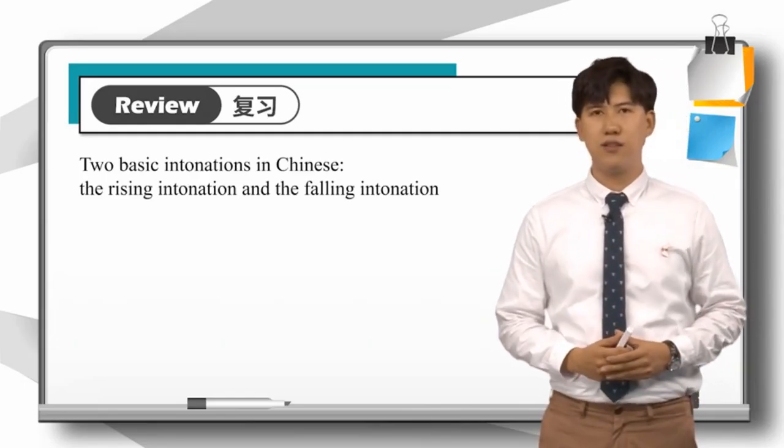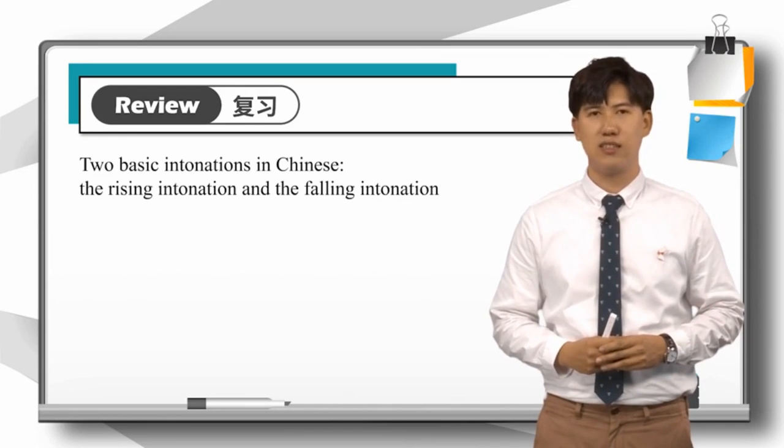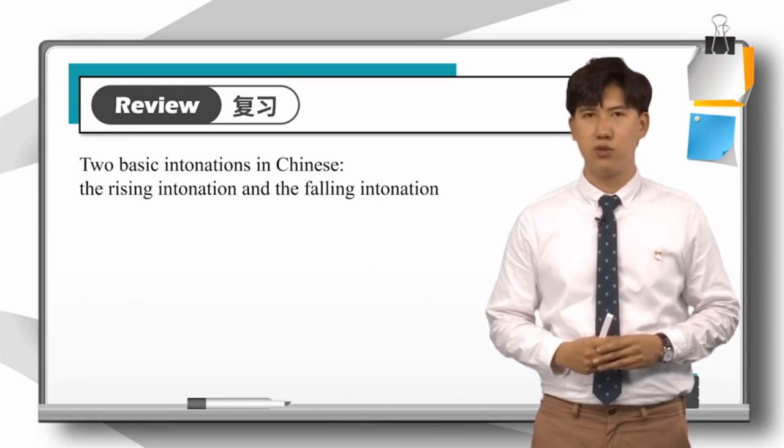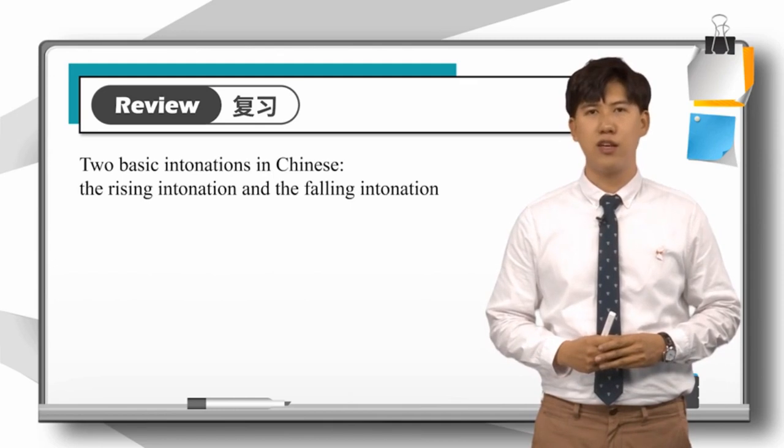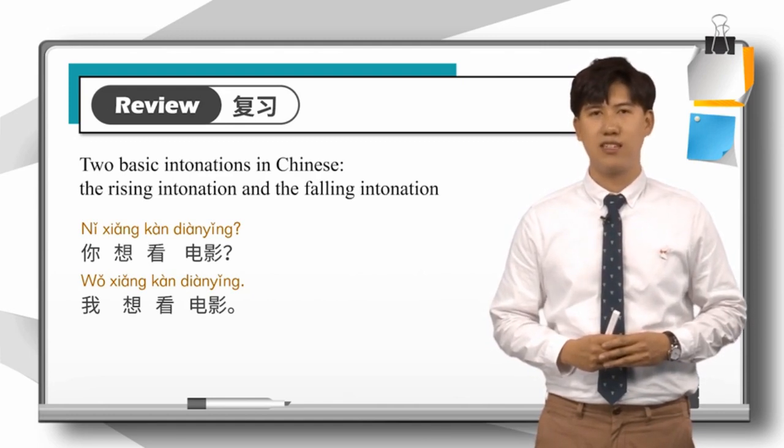In Lesson 7, we know there are two basic intonations in Chinese: the rising intonation and the falling intonation. Now let me check if you still remember the basic rule. Look at the following two sentences and tell me which one is in a rising intonation and which one is in a falling intonation.